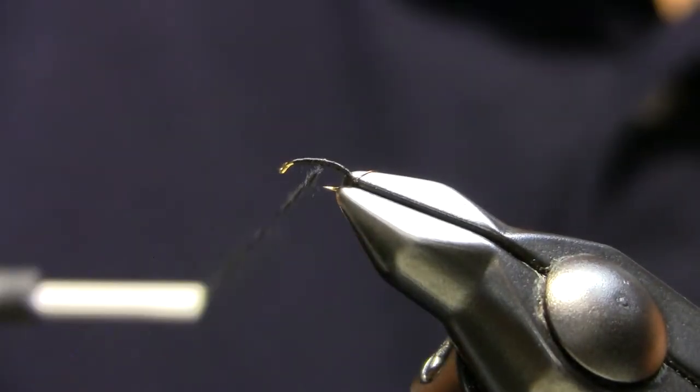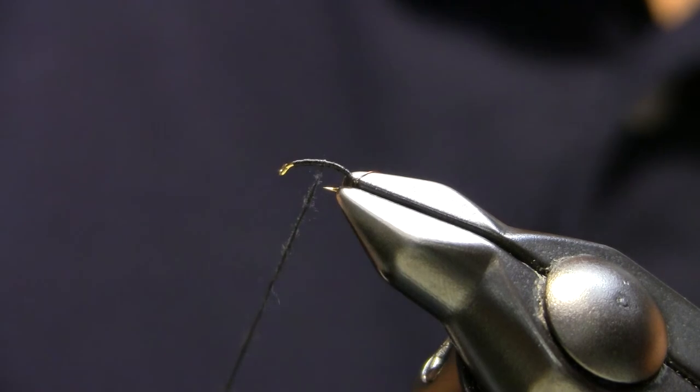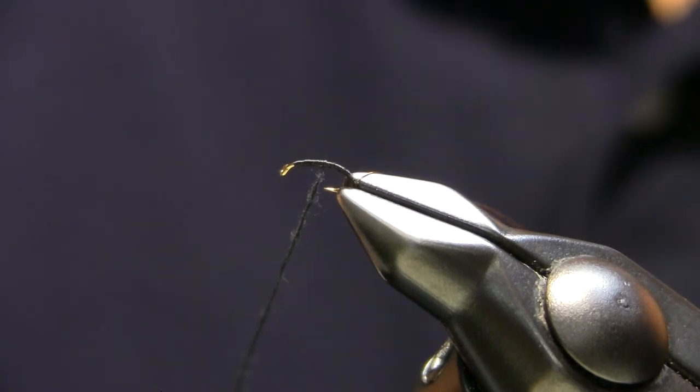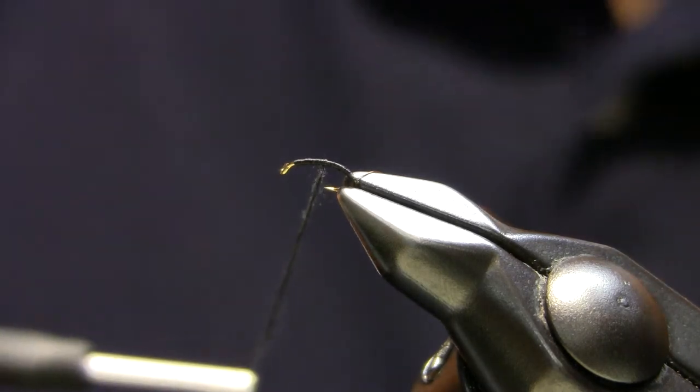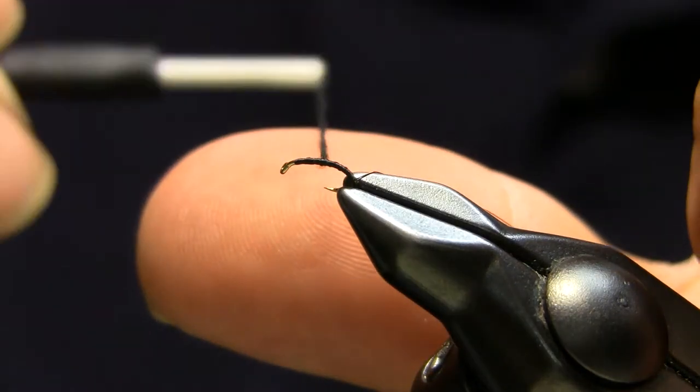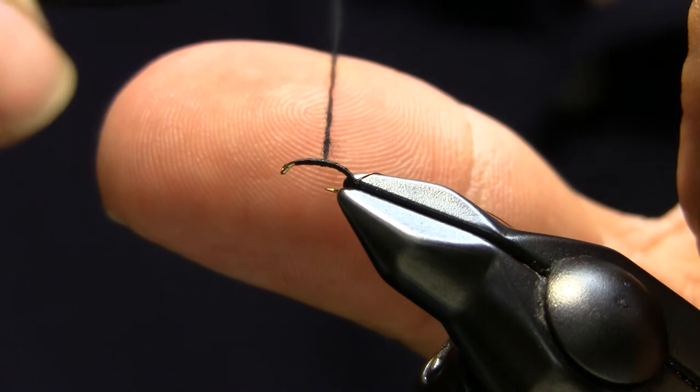So you can see right here I can't get it too lumpy or too thick because that's where it'll show up on your body is when you get it too thick on there. So you can see I'm pretty thin. Can you see that?